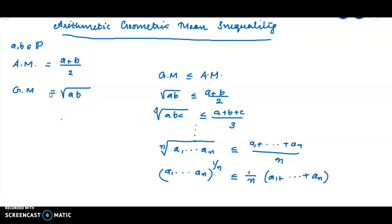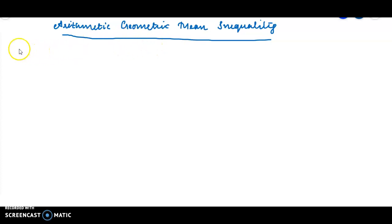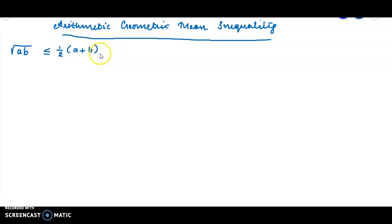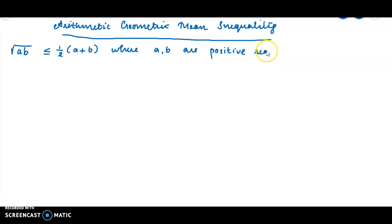Now we move to the statement of the Arithmetic Geometric Mean Inequality. The inequality states that the square root of AB is less than or equal to one half of A plus B, for all positive real numbers A and B, where A and B are elements of the positive real numbers. In short, geometric mean is less than or equal to arithmetic mean: GM ≤ AM.